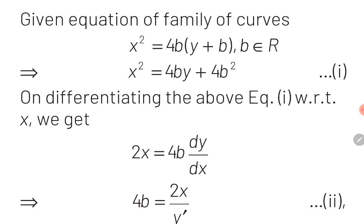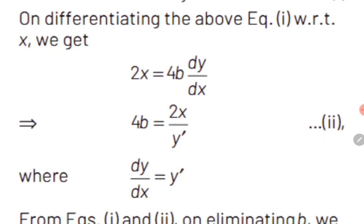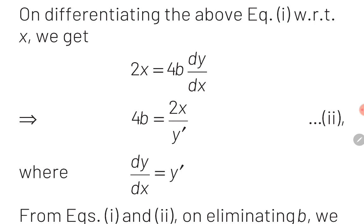Opening the bracket on the right hand side, the equation becomes x² = 4by + 4b². Now we will take the derivative on both sides. On the left hand side, derivative of x² will be 2x, and on the right hand side, derivative of 4by will be 4b·(dy/dx). The constant term 4b² on the right side has derivative 0. Rearranging this equation, we obtain 4b = 2x/y', where y' = dy/dx.